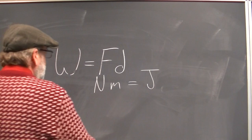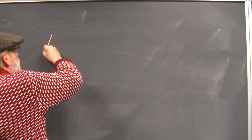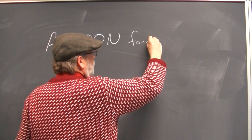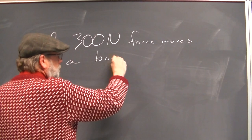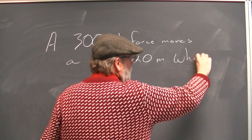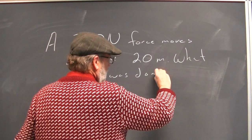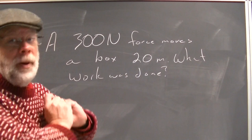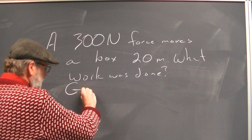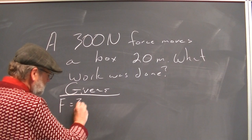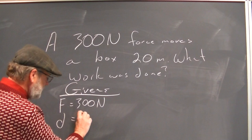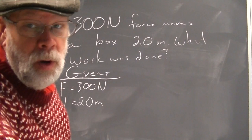How about an example problem just with work? A 300-newton force moves a box 20 meters. What work was done? We have a force moving a box through a distance. Because the box moved, you know that work was done. Givens: the force equals 300 newtons, the distance equals 20 meters, and we want to know what work was done.